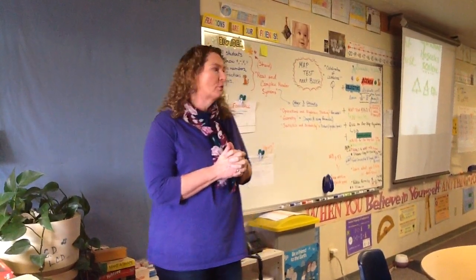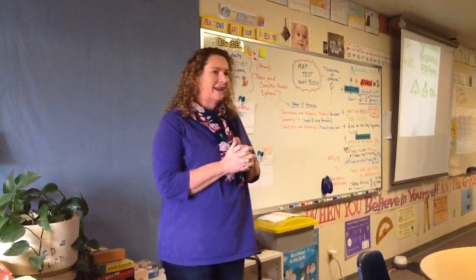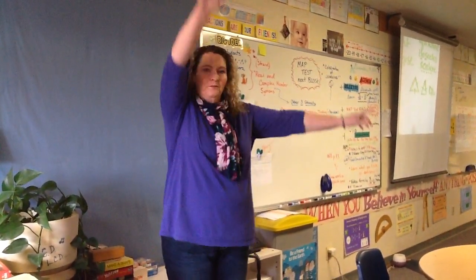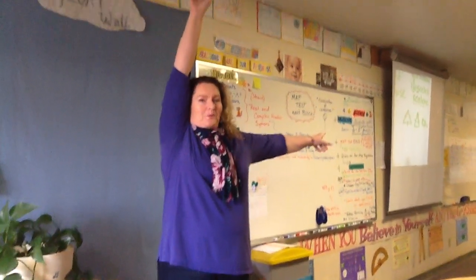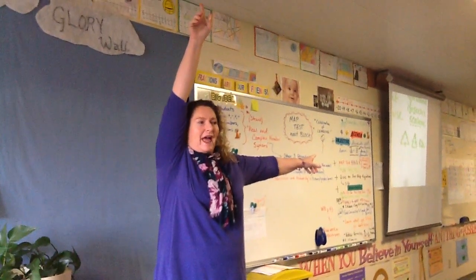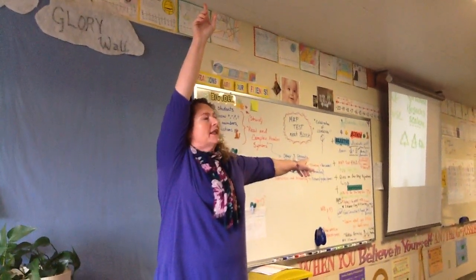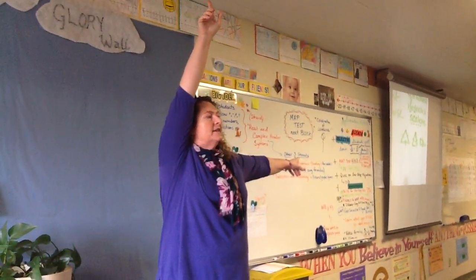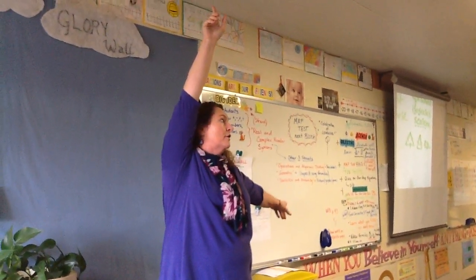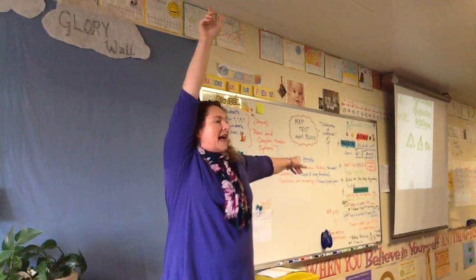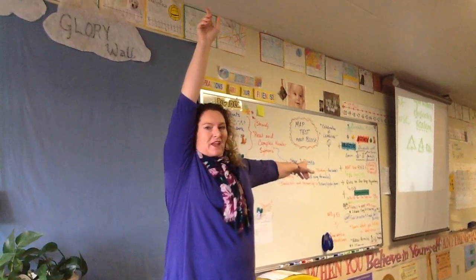So everybody please show me a right angle. How many degrees is a right angle, everybody? 90 degrees. Be careful that you're not going bigger — make it exactly 90.